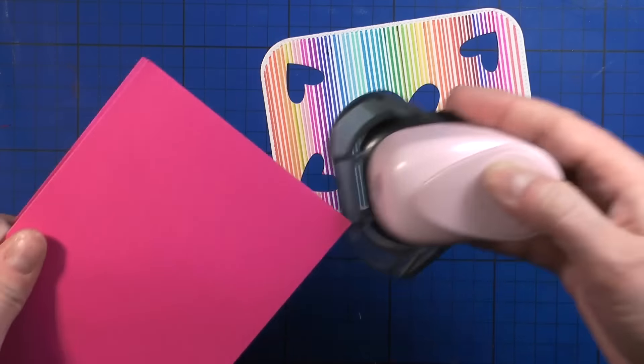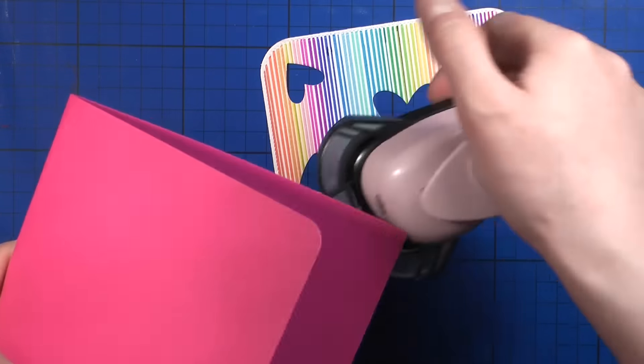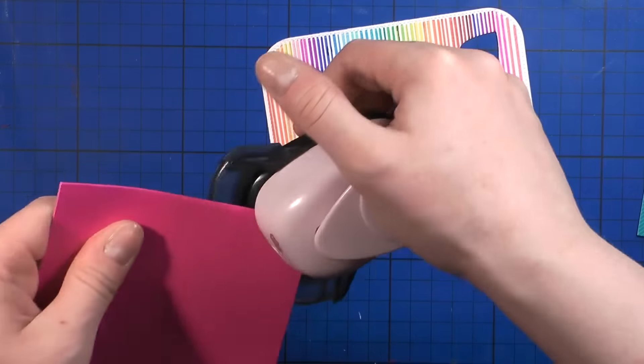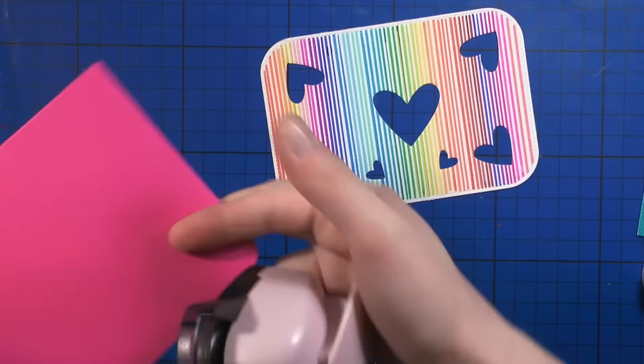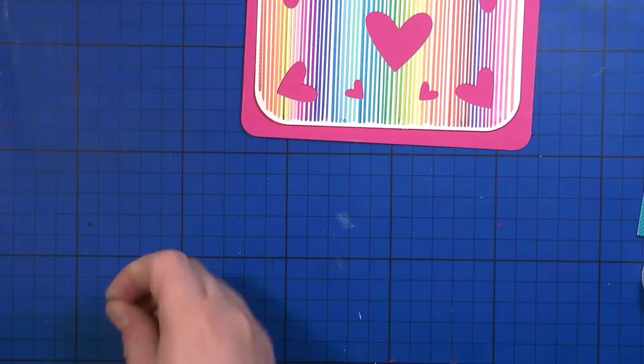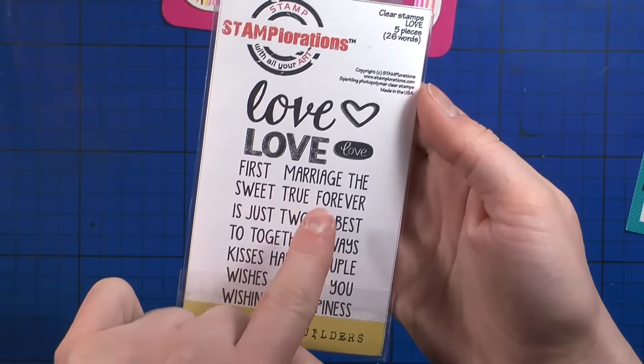And now back to the second card. I'm going to use this corner rounder to round all the corners of my card base. I went with this nice neon pink. I wanted the corners of my card base to match my card front. And I will also use some double-sided foam tape underneath my front panel to pop it.